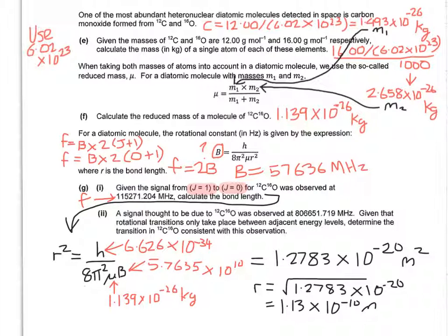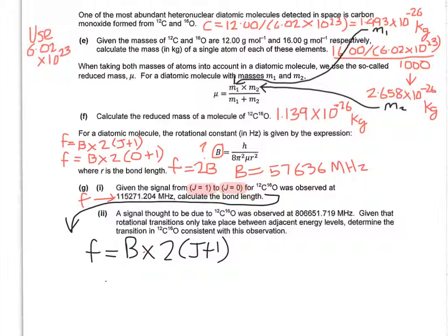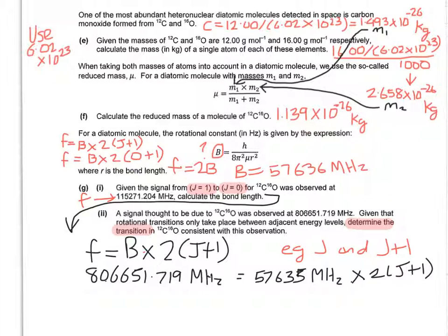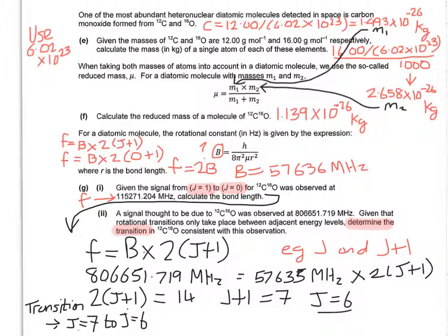Now we have to move on to the next part to determine the transition. So we want J and J plus 1 this time. It tells us that it's 806651.719. So it's quite simple, the maths here. It gives you a bit of a break. You can clearly work out what 2J plus 1 is. So 2(J + 1) is 14. So J + 1 is 7, J equals 6. That means J equals 7 to J equals 6 must be the transition.